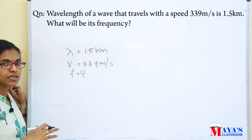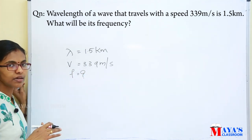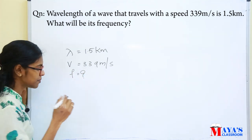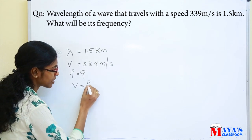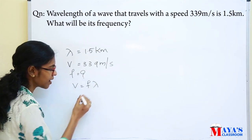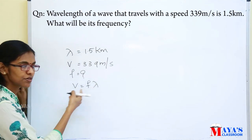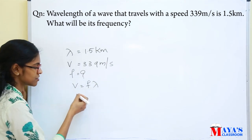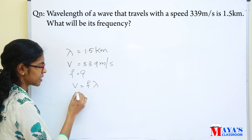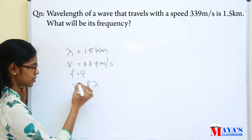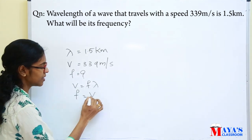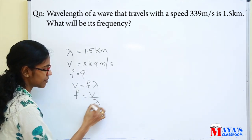We have a frequency equation. We studied V is equal to F times lambda. So F is equal to V divided by lambda.